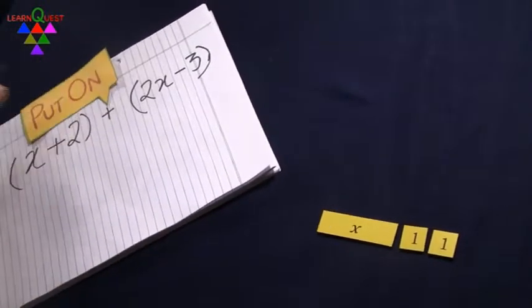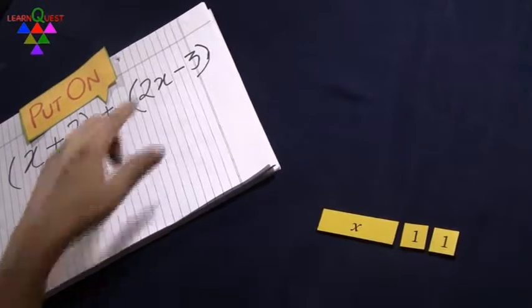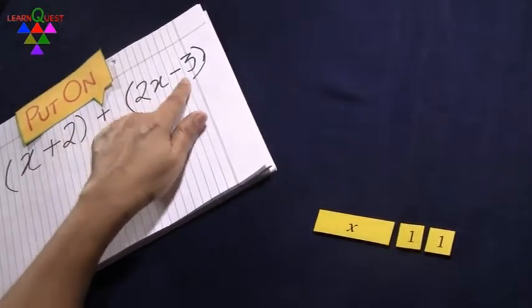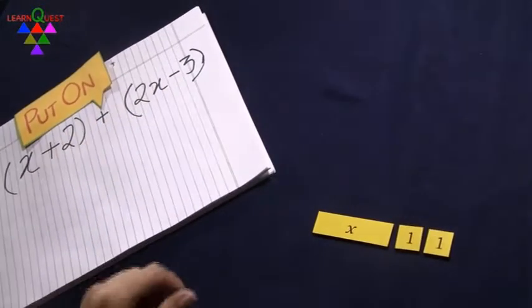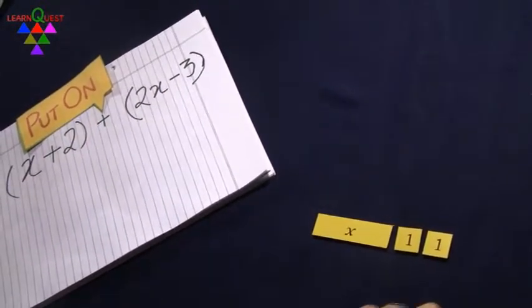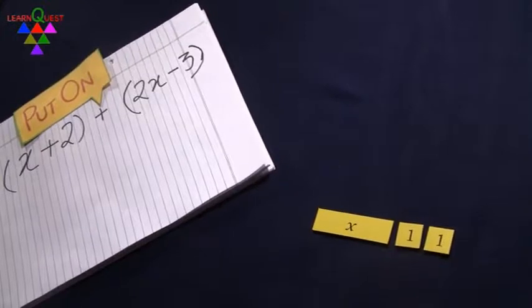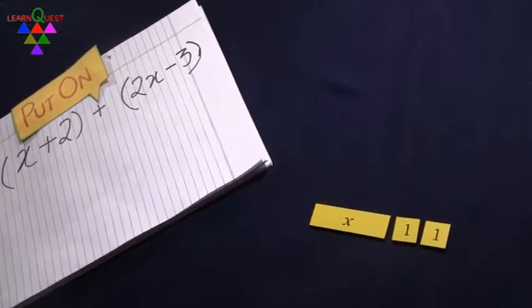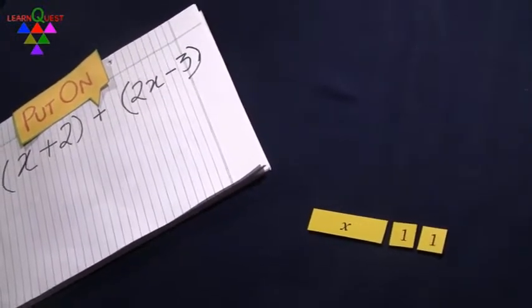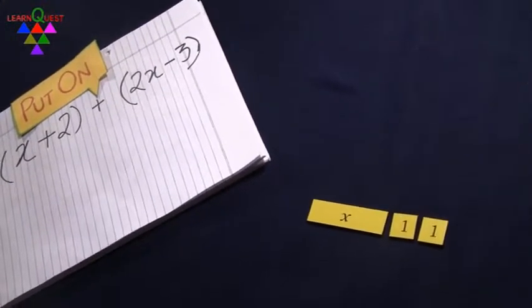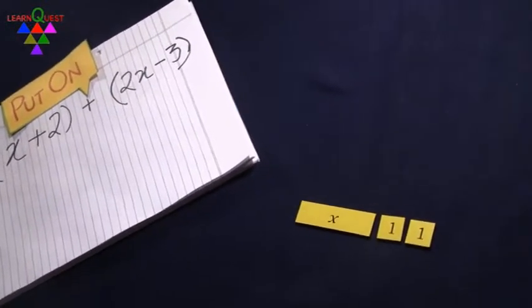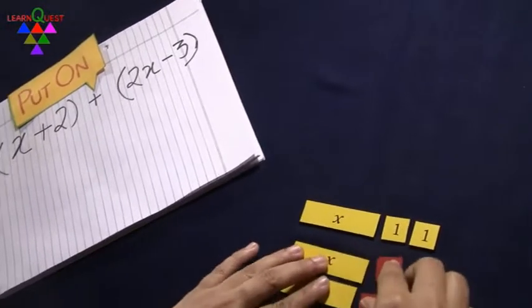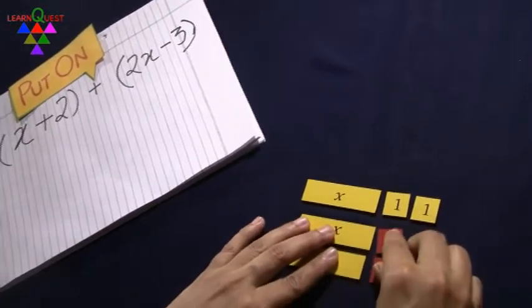What do I have to put on? 2x minus 3. So let me add 2x — that is 2 yellow rectangles — and 3 red squares. This models 2x minus 3.